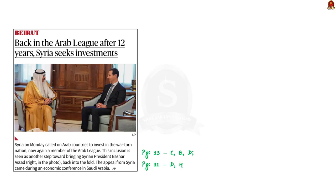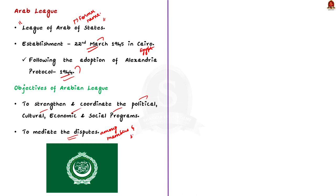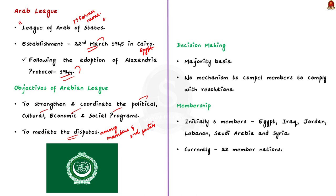This article is about the Arab League, which is in news because of the readmission of Syria. The Arab League is formally known as the League of Arab States. It was established in Cairo on 22nd March 1945, following the adoption of the Alexandria Protocol in 1944. The objective of the Arab League is to strengthen and coordinate the political, cultural, economic and social programmes of its members and to mediate disputes among them or between them and third parties. The Arab League makes decisions on a majority basis, but there is no mechanism to compel members to comply with resolutions — so resolutions taken by the Arab League are not obligatory.